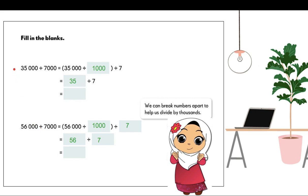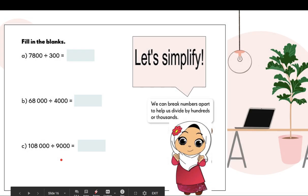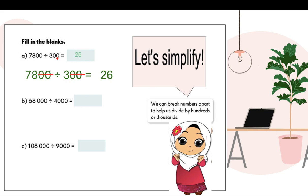I'm sure you can answer on your own now. 35,000 divided by 7,000 is equal to 5. 56,000 divided by 7,000 is equal to 8. Let us simplify the process: 7,800 divided by 300 is the same as chopping off some zeros — 78 divided by 3 gives us 26. Therefore, the answer to 7,800 divided by 300 is equal to 26.